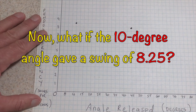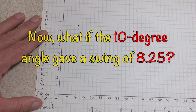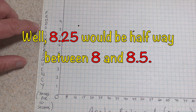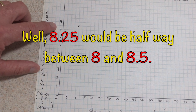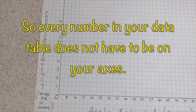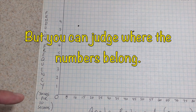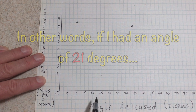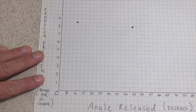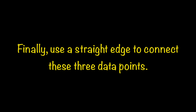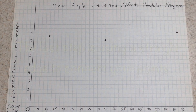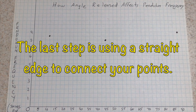Now, what if the 10-degree angle gave a swing of 8.25 swings per 10 seconds? Well, 8.25 would be halfway between 8 and 8.5. Every number on your data table doesn't have to be on your axes, but you can judge where the numbers belong. In other words, if I had an angle of 21 degrees, I would know that would be just a little bit past the 20. The last step is using a straight edge to connect your points.